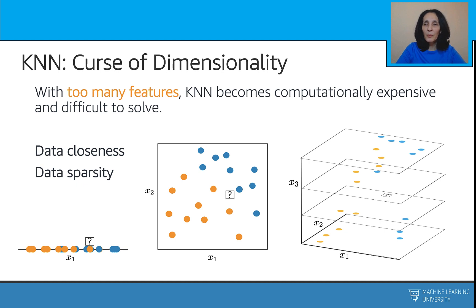Speaking of high-dimensional feature spaces, with too many features, the k-nearest neighbor algorithm becomes computationally expensive and difficult to solve — both in finding the neighbors and in storing the entire dataset. While there are fast algorithms for finding nearest neighbors that can reduce the computational load, the bigger issue with k-nearest neighbor is that it breaks down when the dimensionality of the features is high. In a high-dimensional space, most points taken from a random finite set inside a finite volume are far away from each other.